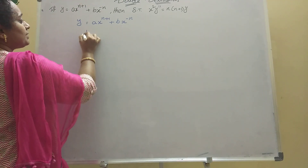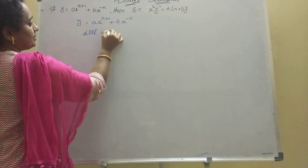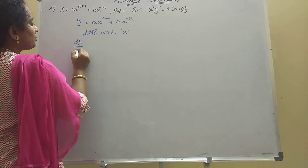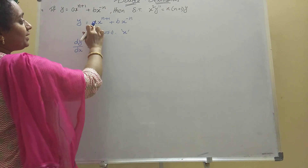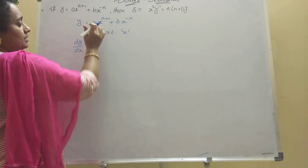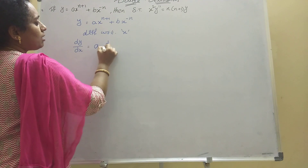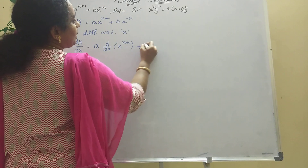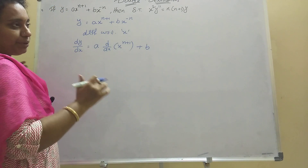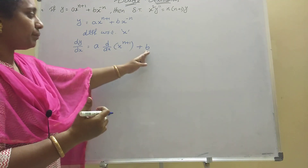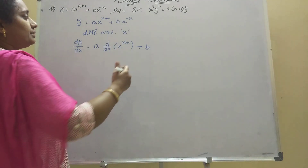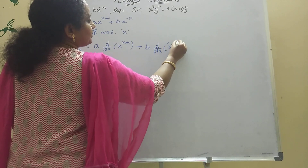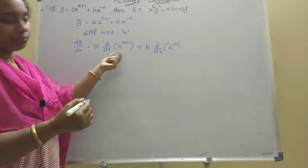Now differentiation with respect to x. So dy/dx equals — a is a constant, so separate the terms: a into d/dx of x^(n+1), plus b into d/dx of x^(-n). Here a and b are constants, so keep them out and take derivatives of the remaining terms.